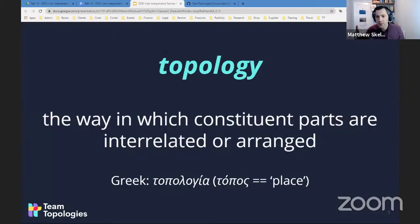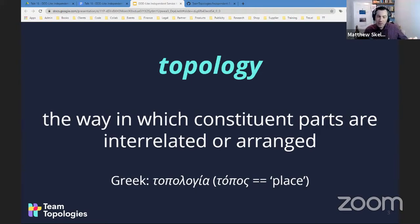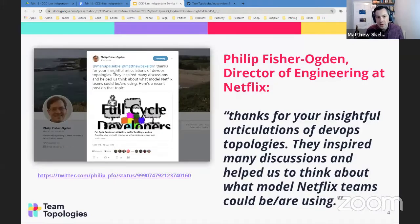It's worth looking at the word 'topology' — what does it even mean? It comes from a Greek word meaning the way in which constituent parts are interrelated or arranged. In the context of Team Topologies, this is about how teams are interrelated or arranged. Anyone familiar with DDD context will start to think, 'Ah yes, I understand how this is relevant,' because if we're thinking about bounded contexts and domains, we've got teams aligned to a particular bounded context or domain.